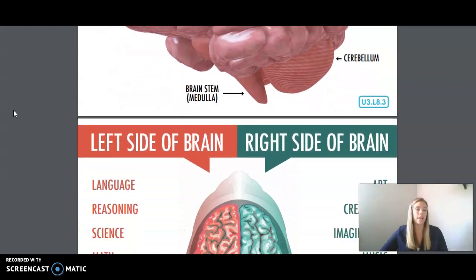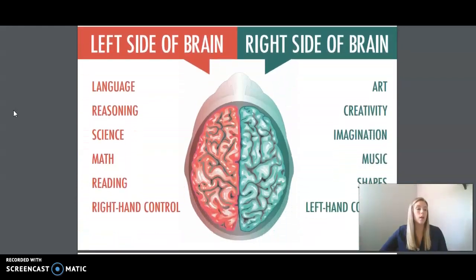Let's look more closely at the cerebrum. The cerebrum is divided into two halves or hemispheres. The two hemispheres of the brain, the left hemisphere and the right hemisphere, are linked to one another by thick nerve fibers.